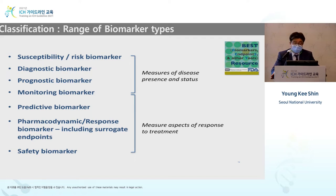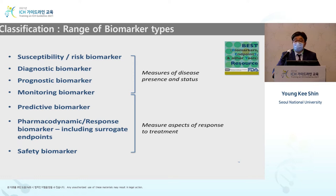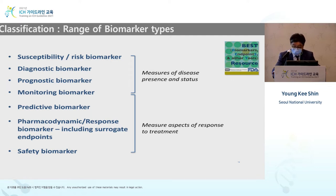There are seven different categories of biomarkers: risk biomarkers that measure disease presence and status, predictive, monitoring, and prognostic biomarkers, and markers that predict response to treatment. Pharmacodynamic and response biomarkers are very important for the accelerated pathway. The surrogate endpoint recently used includes a PD biomarker, and amyloid plaque decrease is the surrogate endpoint used. For pharmacogenomics, safety biomarkers are also important.